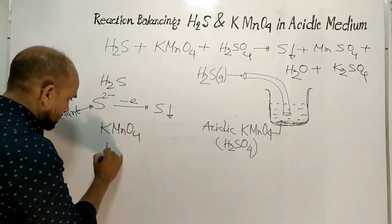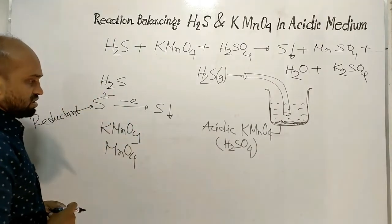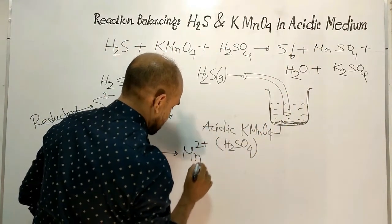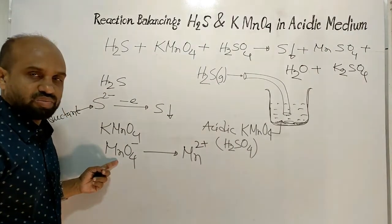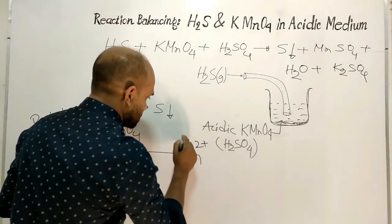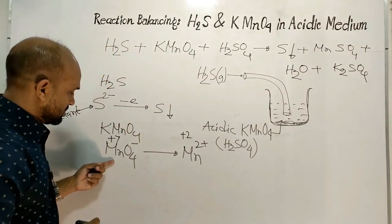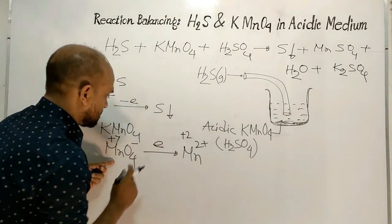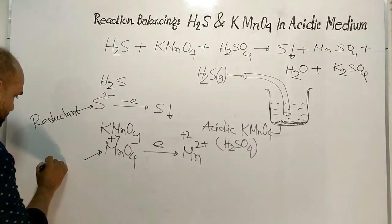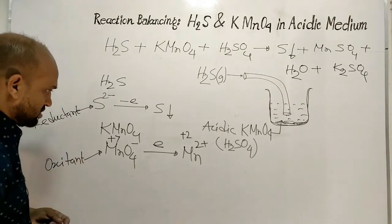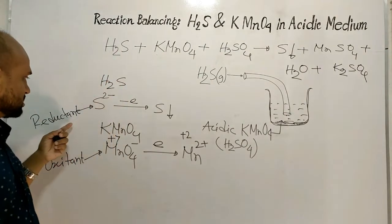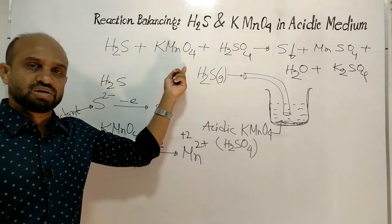In potassium permanganate, the permanganate ion converts to manganese sulfate, meaning the manganese ion changes its oxidation number from plus 7 to plus 2. That means the permanganate ion gains electrons in this reaction, and an electron acceptor is an oxidant. So in this reaction, hydrogen sulfide is the reductant and potassium permanganate is the oxidant.